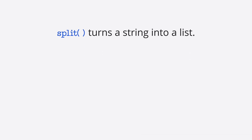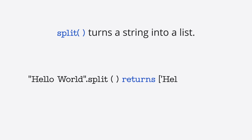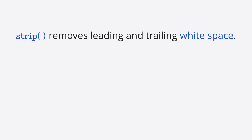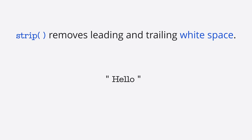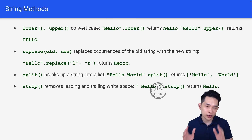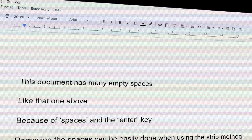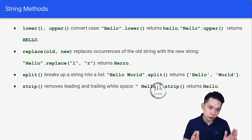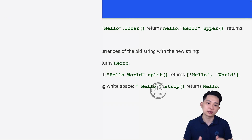The split() method breaks a string into a list: "Hello World".split() returns ['Hello', 'World']. The strip() method removes leading and trailing whitespace: if your string has empty spaces at the front and back, hello.strip() returns 'hello'. We commonly use strip() when handling text files, which often contain extra spaces or newlines.